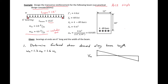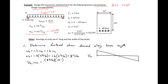Our first step is to determine the factored shear demand along the beam length and at the critical section. We first find our factored distributed load: WU = 1.2 × 4 kips/ft (dead load) + 1.6 × 2 kips/ft (live load) = 8 kips/ft. For a simply supported beam, the shear at the ends equals the reaction, so VU max = WU × L / 2 = 8 × 15 / 2 = 60 kips.